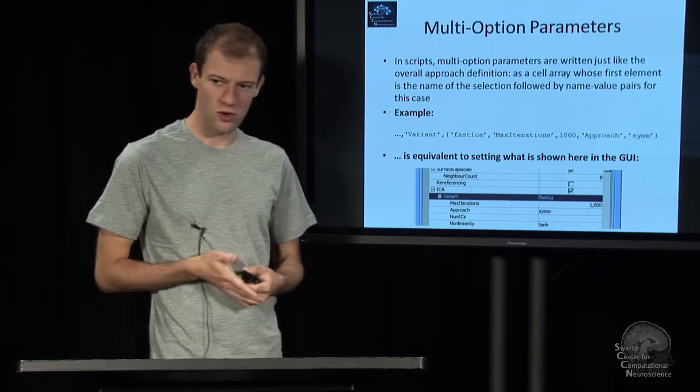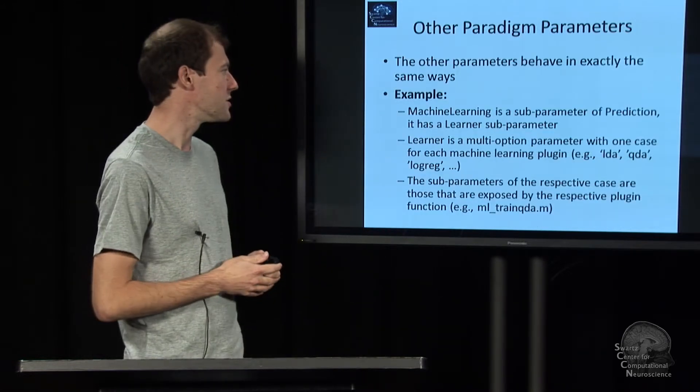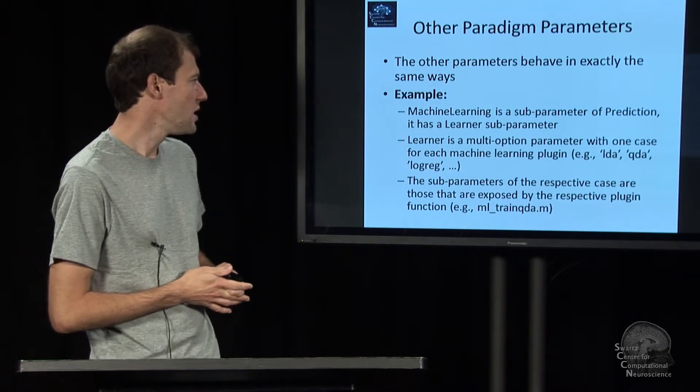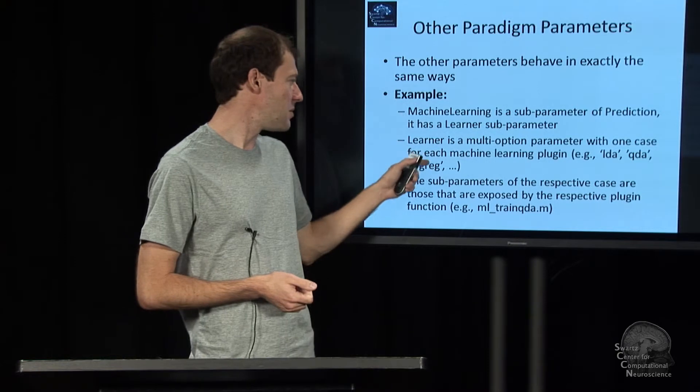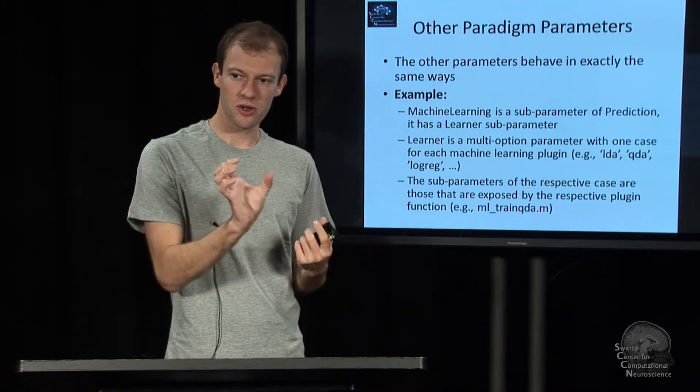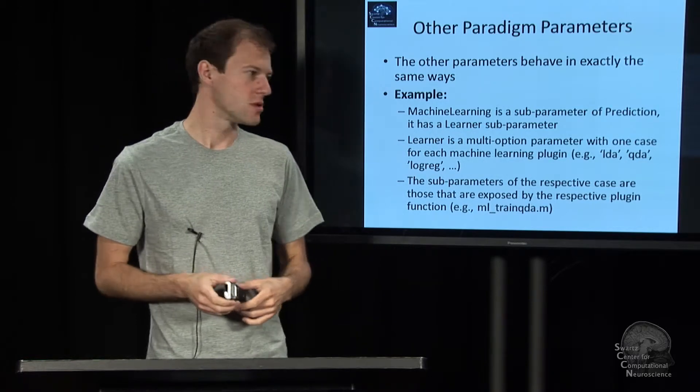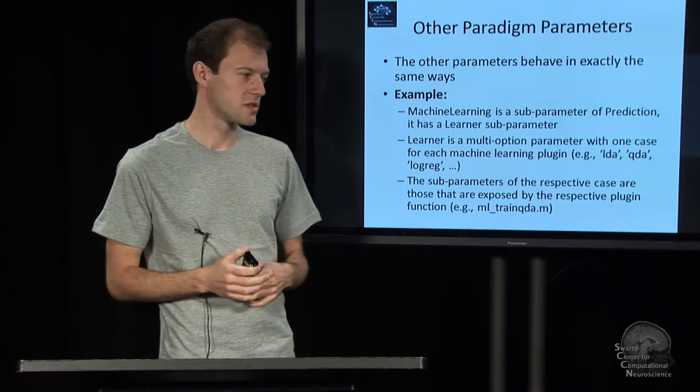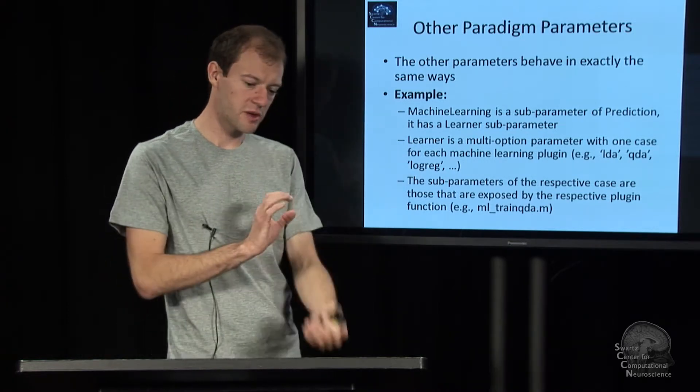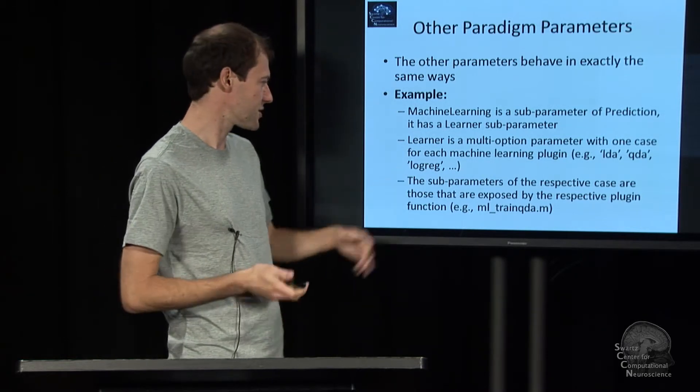There are not too many occurrences of that in BCI lab, but for example ICA or machine learning have these kinds of things. Here are a few more examples. One popular example is in machine learning, just a learning function here called learner, and that is also a multi-option parameter because there's linear discriminant analysis, quadratic discriminant analysis, logistic regression and all these things, and all of these have different subparameters. LDA has different parameters than logistic regression.